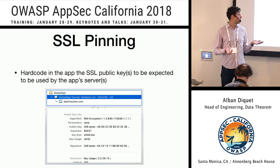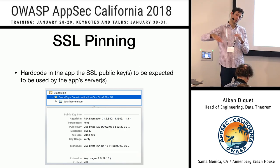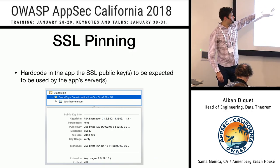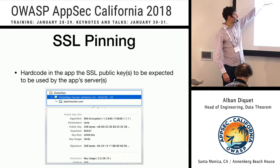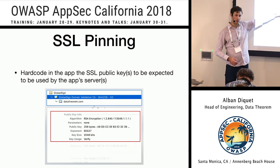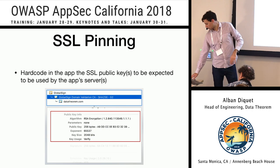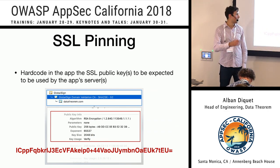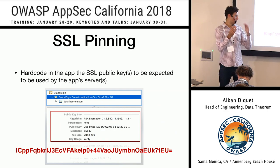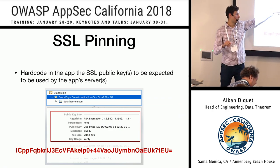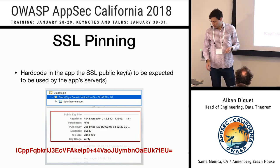That extra step is basically hard-coding the key you know is going to be used on your server. If an app is trying to connect to a server, first it does all the default validation, and with pinning it also requires the certificate chain to contain the specific key. The real implementation is to hash the public key data — you get a hash, and that's an SSL pin. So you have that extra validation: the certificate is trusted, but does the chain contain the key we know is being used in production?